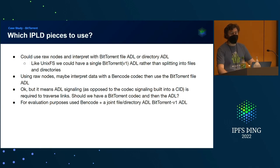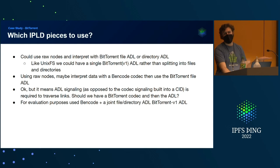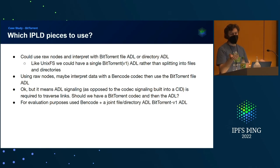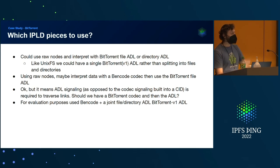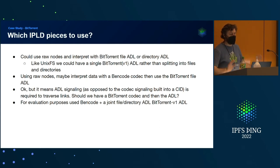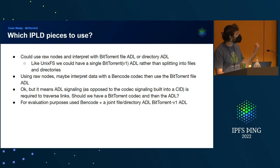I still need ADL signaling somewhere. Codecs have this signal that lives inside the CID, which is one reason people lean on codecs more — there's a nice signaling place for them to live. Should we have a BitTorrent codec and then ADLs? If you do the Bencode thing, I need the ADL signaling to traverse the links, because Bencode doesn't know about CIDs — it's a very simple format that doesn't have hash links. What I did was make a Bencode codec and then a joint file/directory ADL for BitTorrent v1.